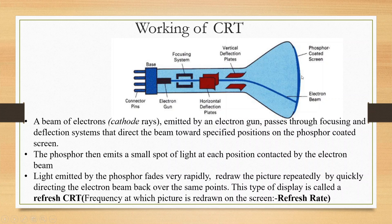This is the screen — the phosphor-coated screen. When the electron strikes the phosphor-coated screen, the phosphor glows. That glow is our display. So this is the basic working of the CRT.